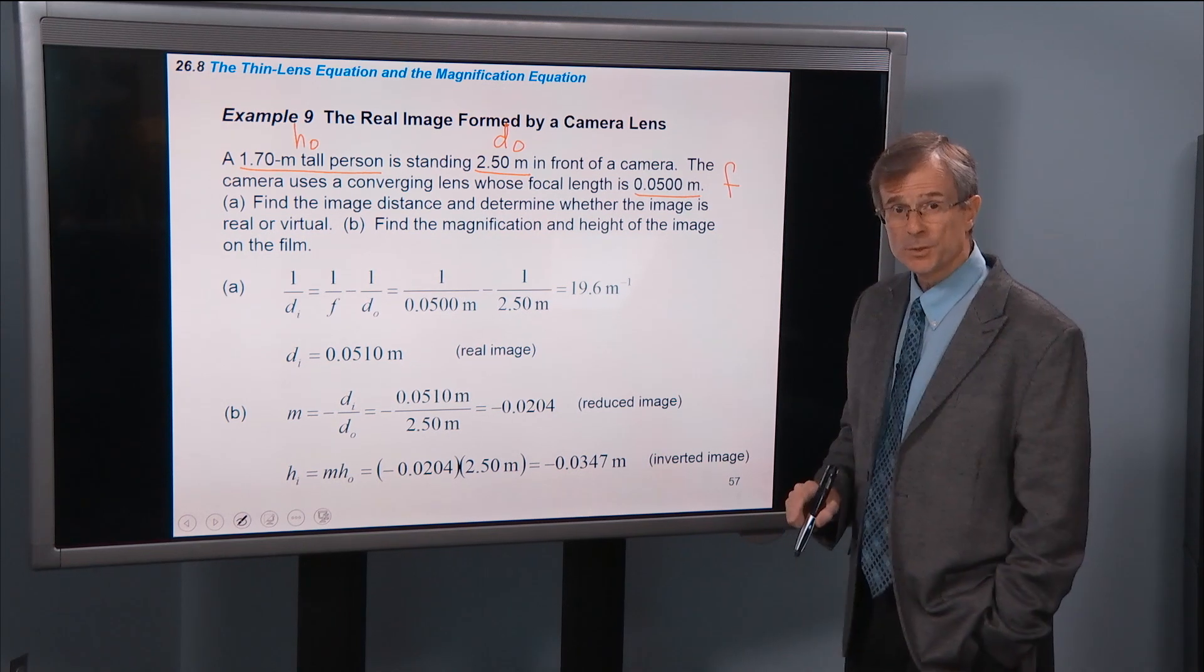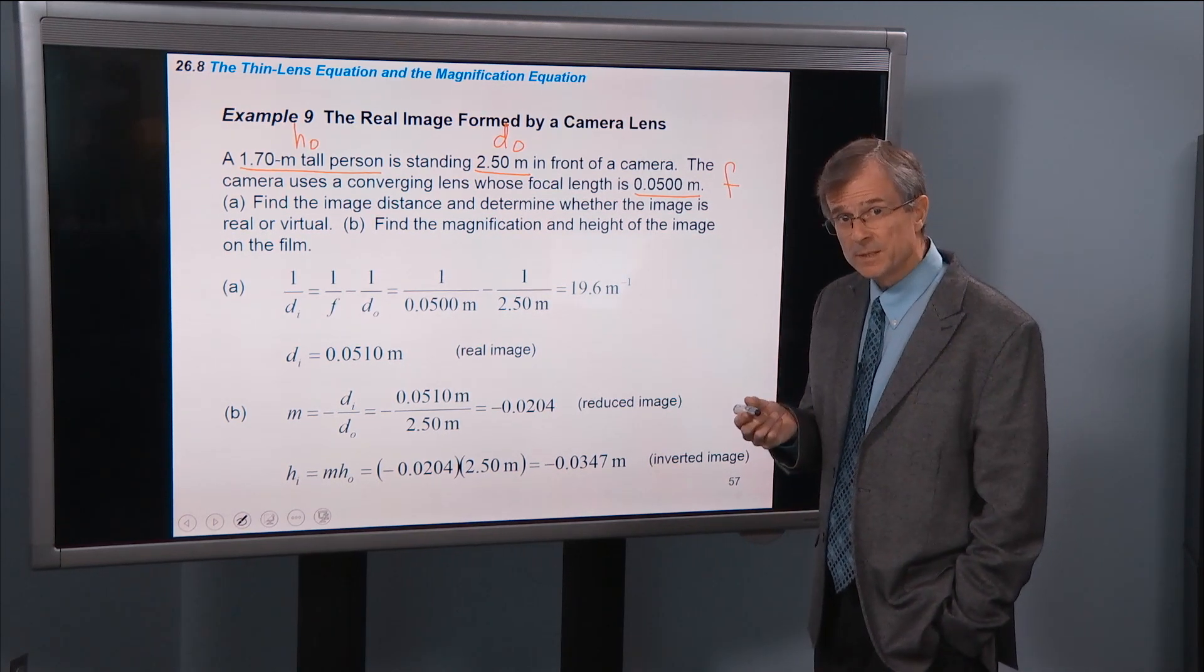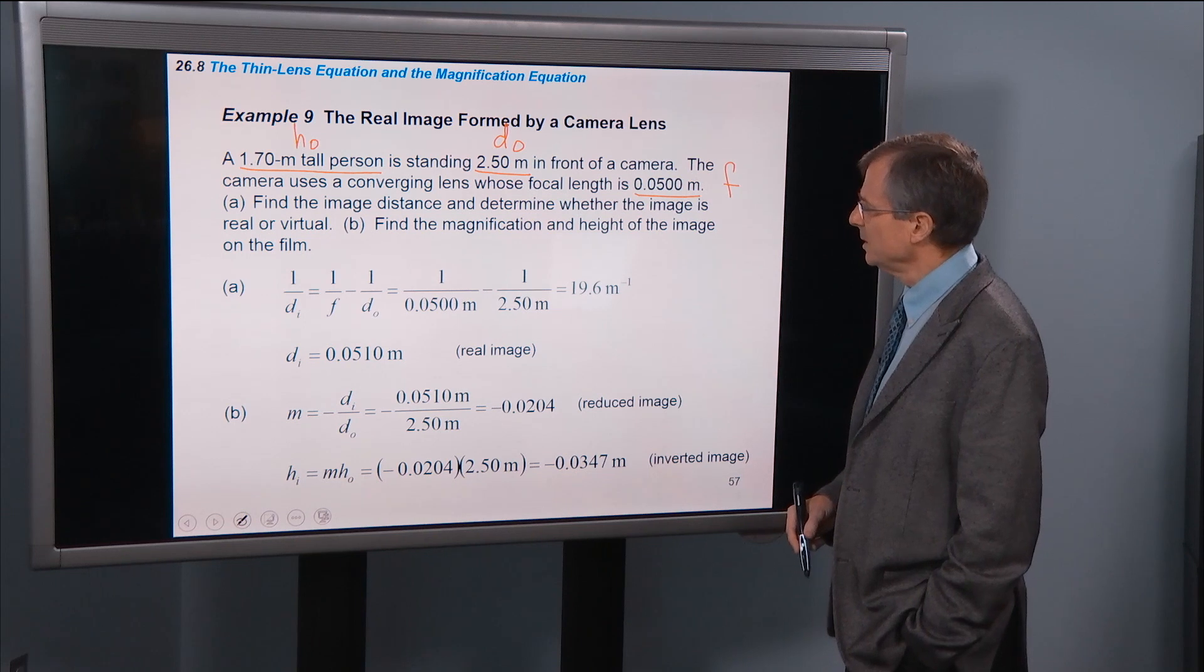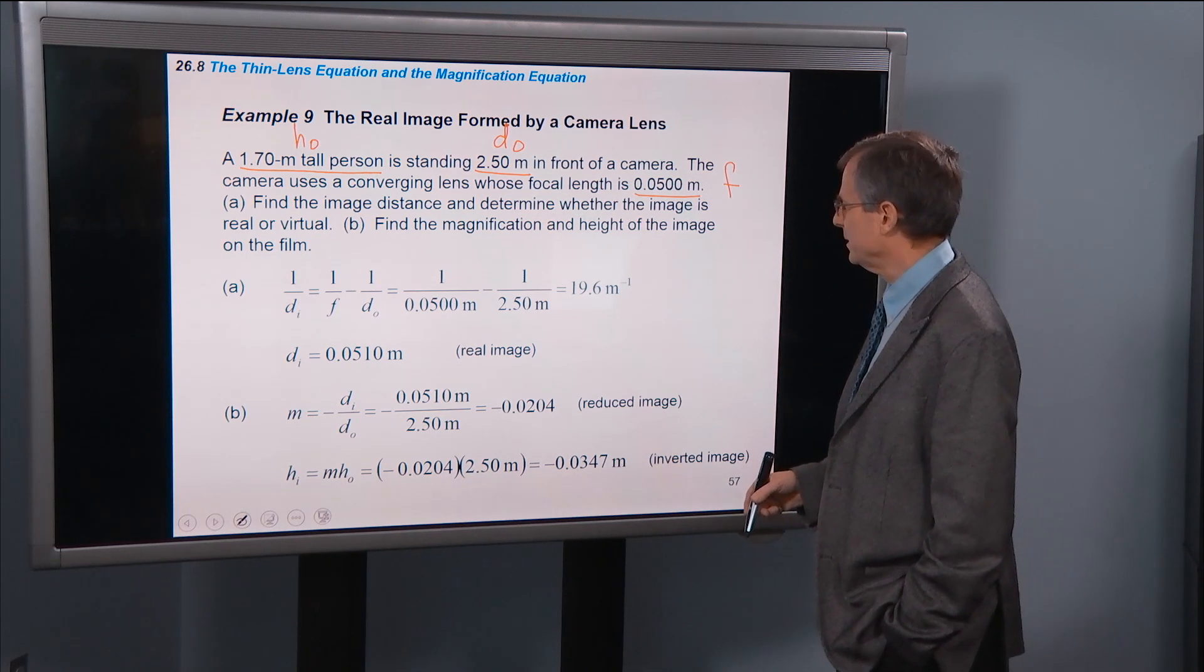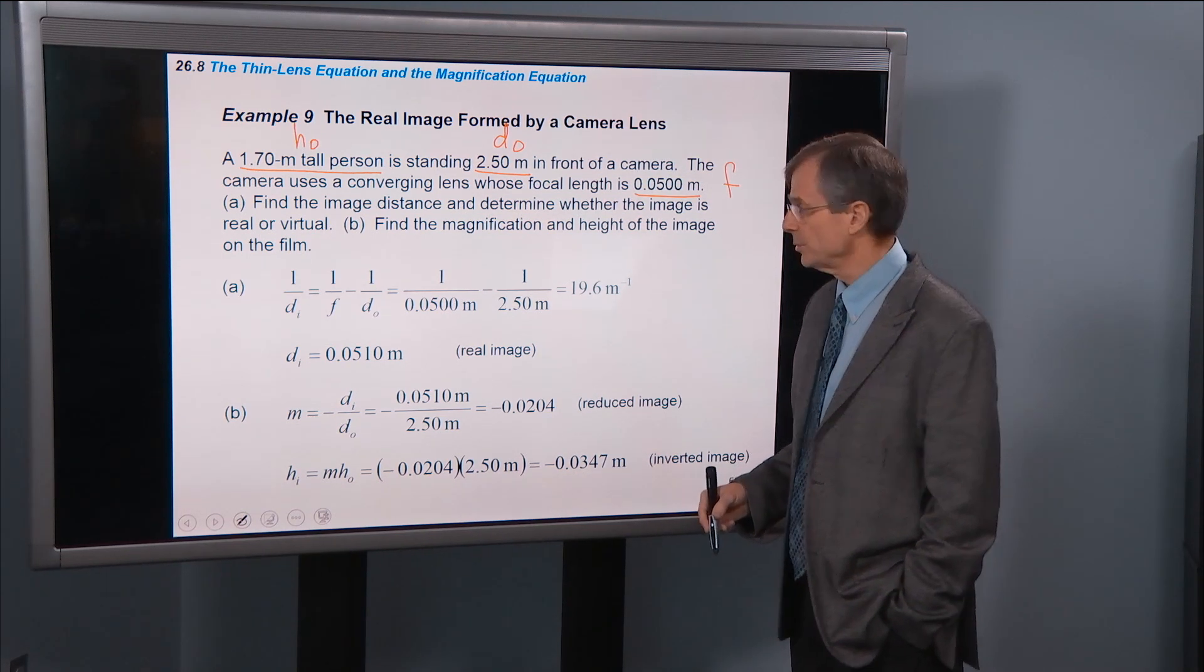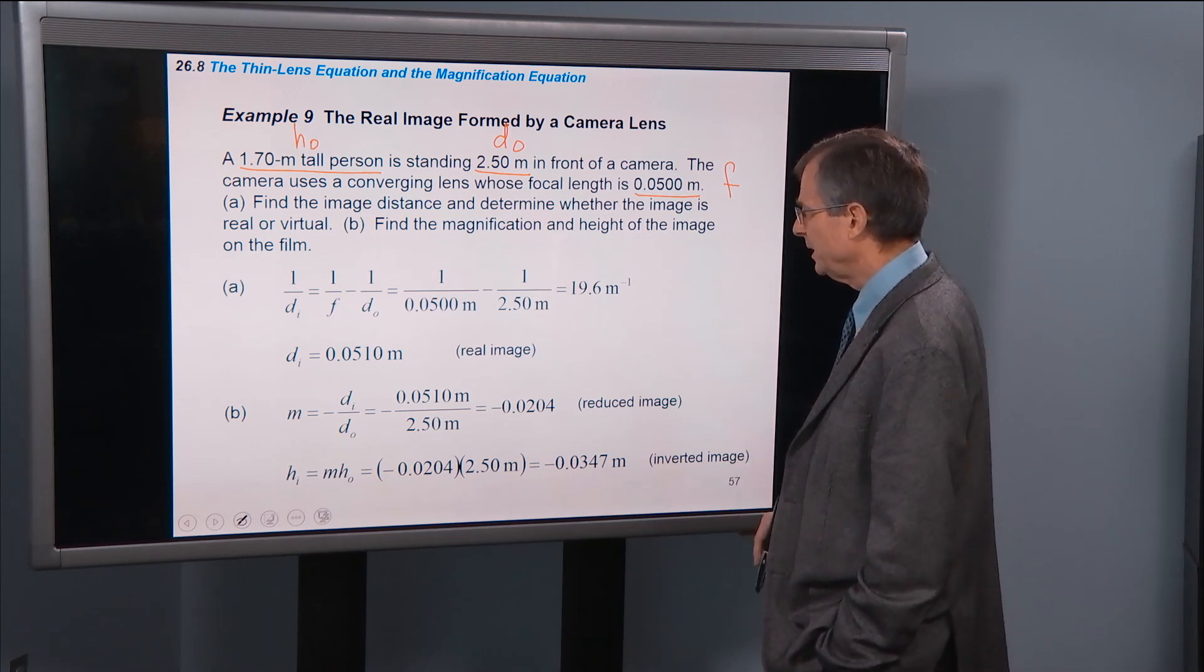It's converging, so we want F to be a positive number. Find the image distance and determine whether the image is real or virtual. Happy day, no big deal.